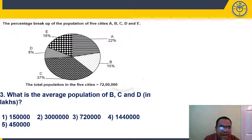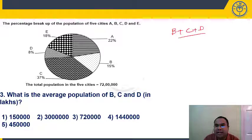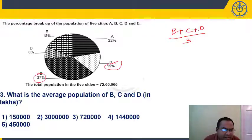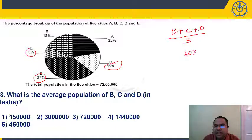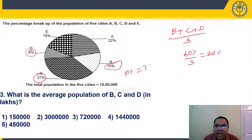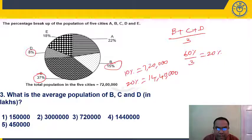Question 3: What is the average population of B, C, and D in lakhs? B plus C plus D in percentage: 15 + 37 + 8 = 60%. Average is 60/3 = 20%. 10% equals 7,20,000, so 20% equals 14,40,000. This is present in option 4.